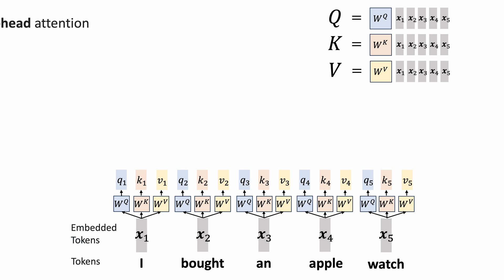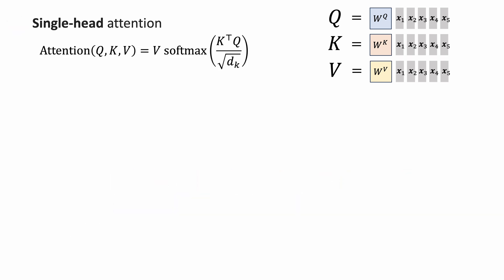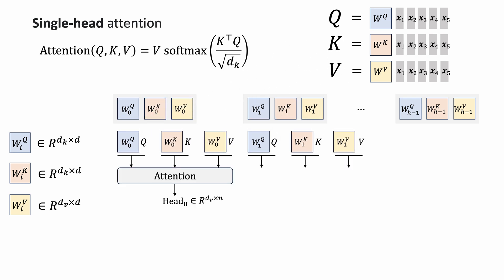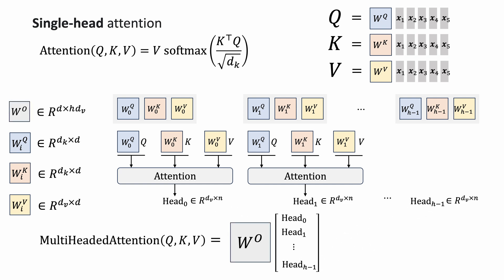This is known as single-head attention, because there's only one set of query, key, and value. But there are many different types of relevance in the sequence we wish the model to capture. We first introduce multiple linear projection matrices that form different representation subspaces. We apply the attention mechanism on each set, concatenate them, and produce the final output with another learned linear projection, WO. This is the design of multi-head attention.